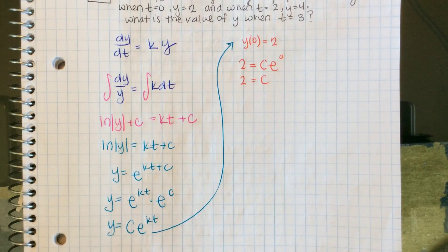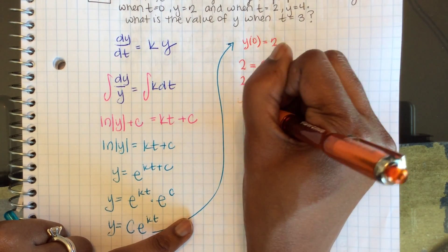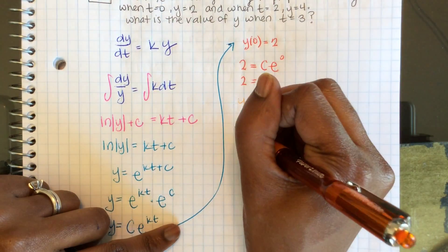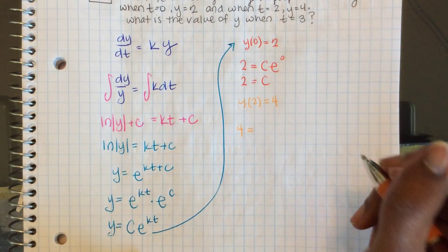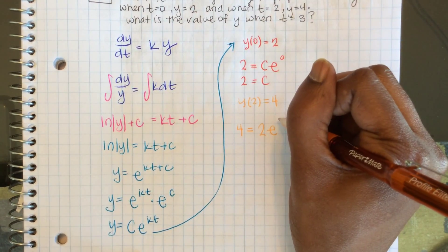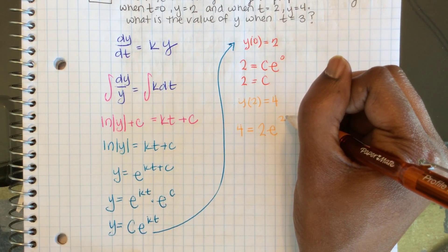Next, when t = 2, y = 4. Plugging that in, 4 = 2e^(2k), since we know C = 2.